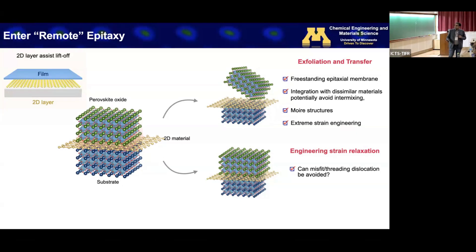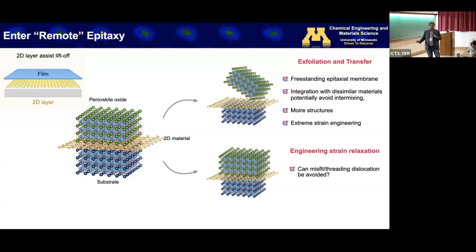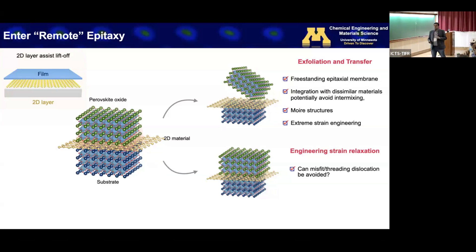You can also think about the strain relaxation process at this interface — especially for heteroepitaxy — being very different than in conventional epitaxy without a 2D interlayer, because strain relaxes spontaneously or gradually here. This may allow you to modify misfit and threading dislocation densities, potentially enabling growth of defect-free films using remote epitaxy.